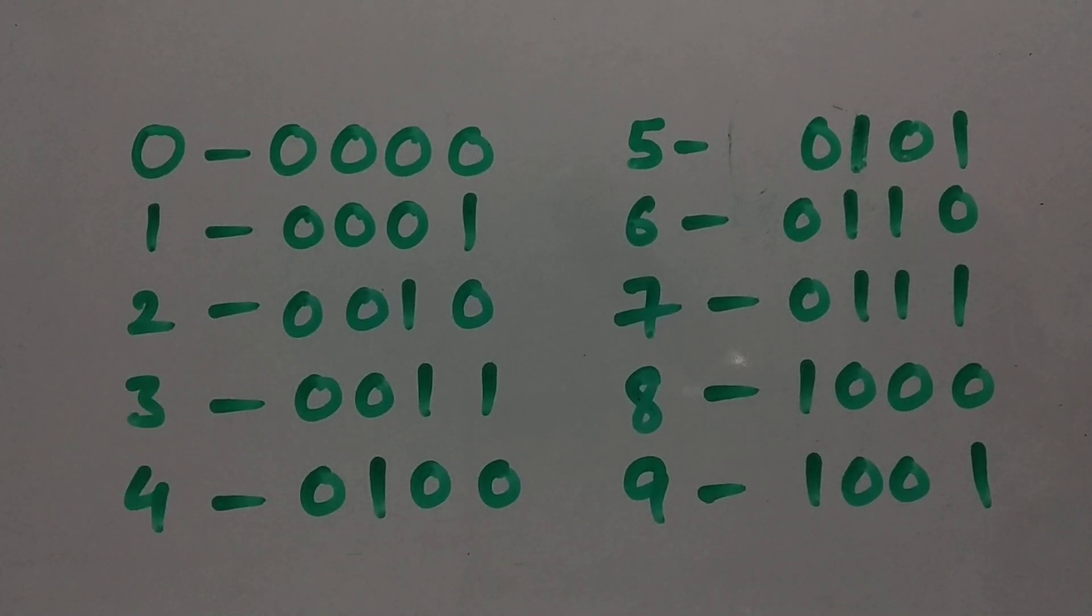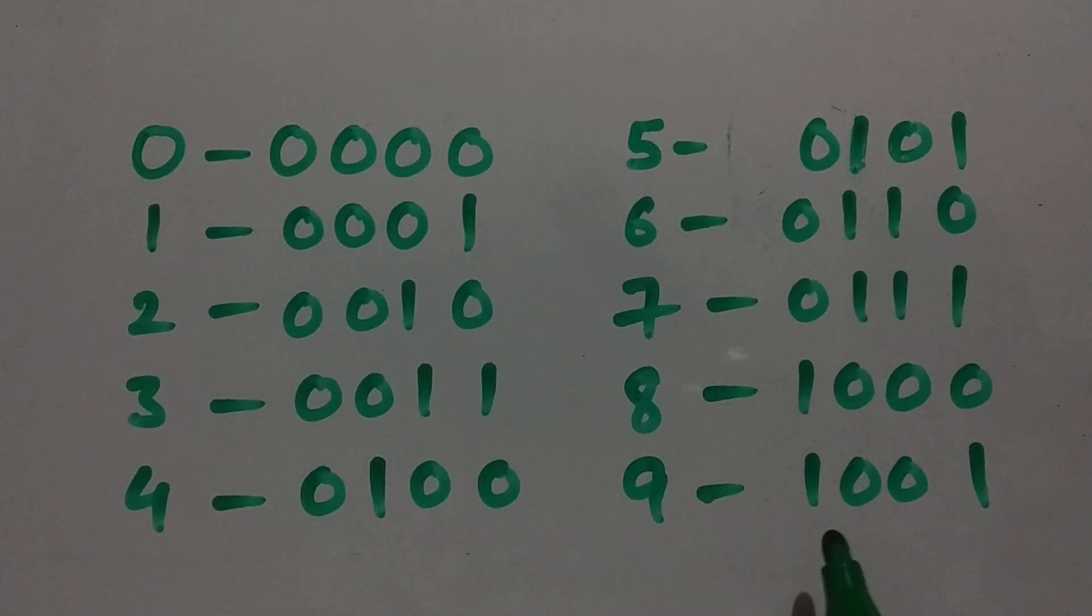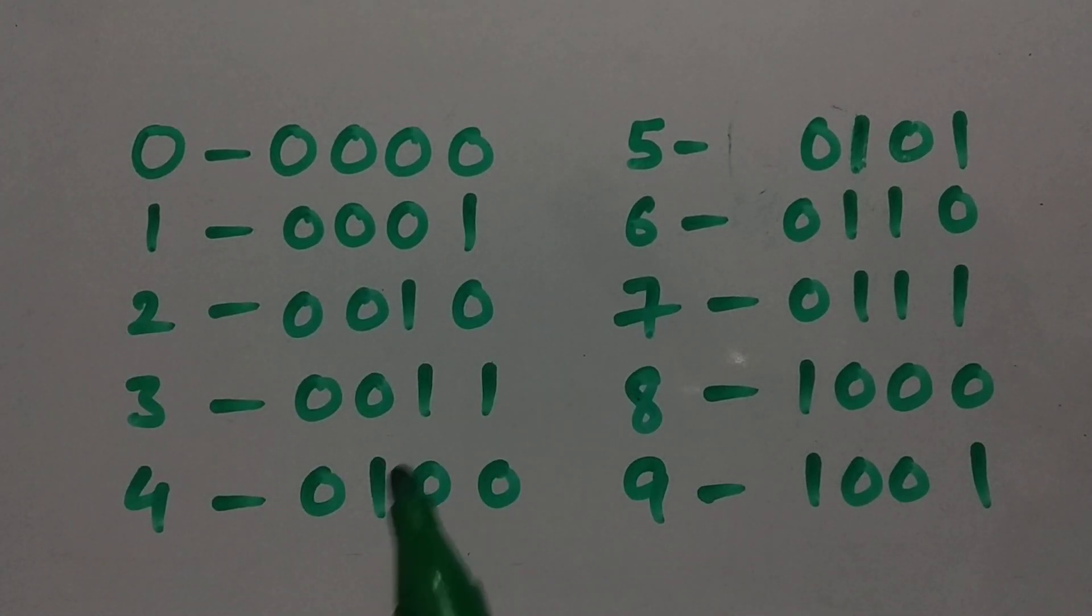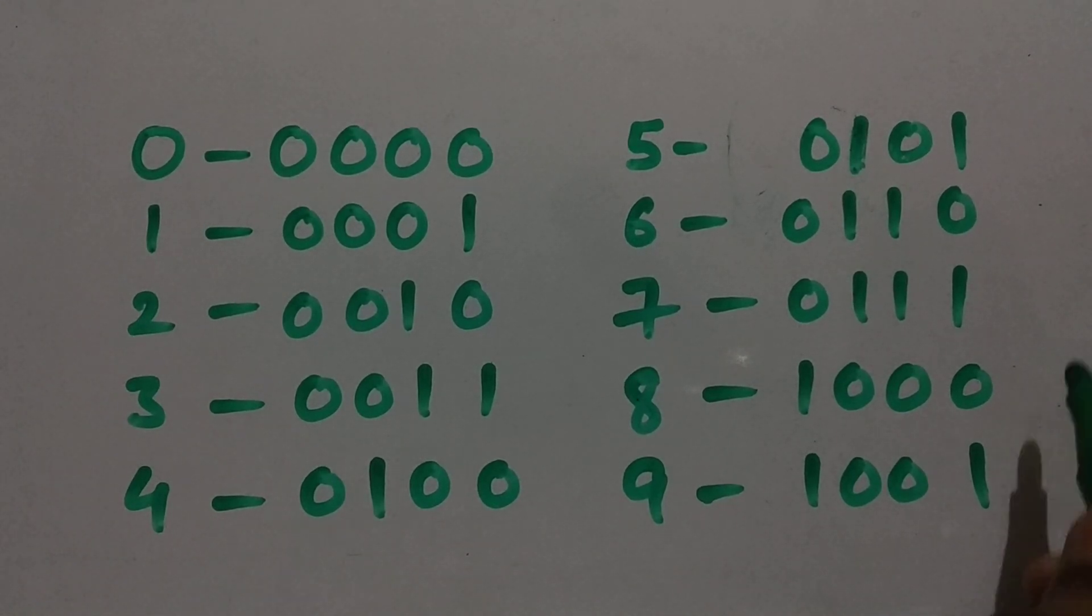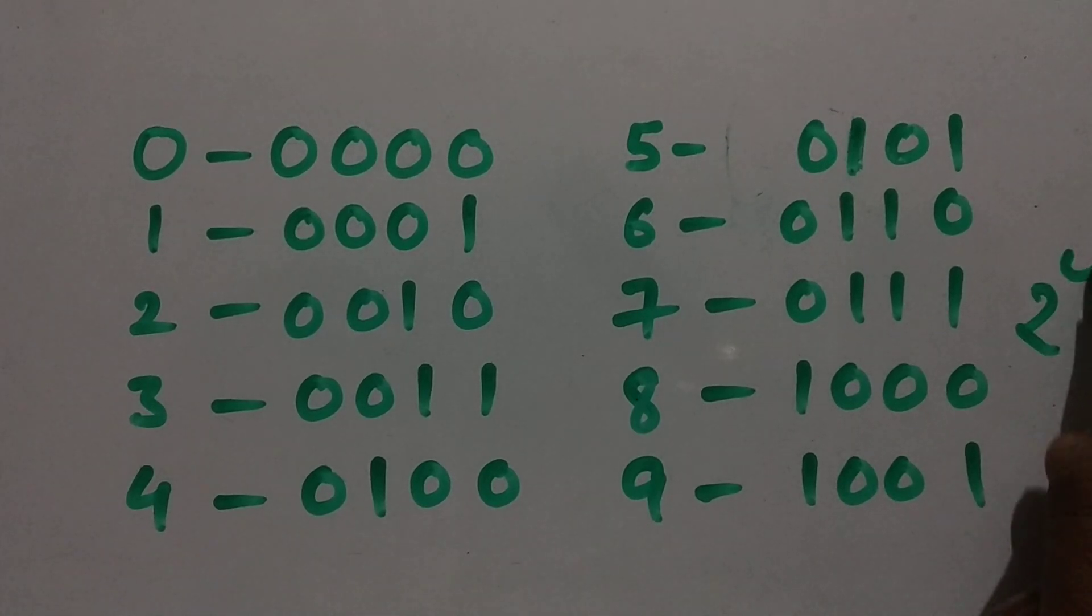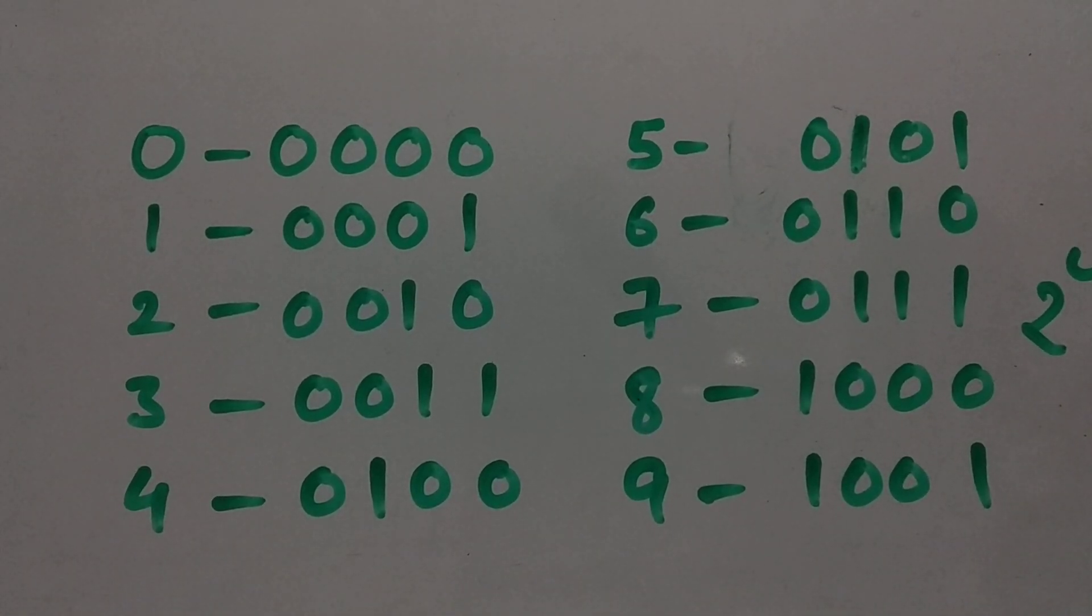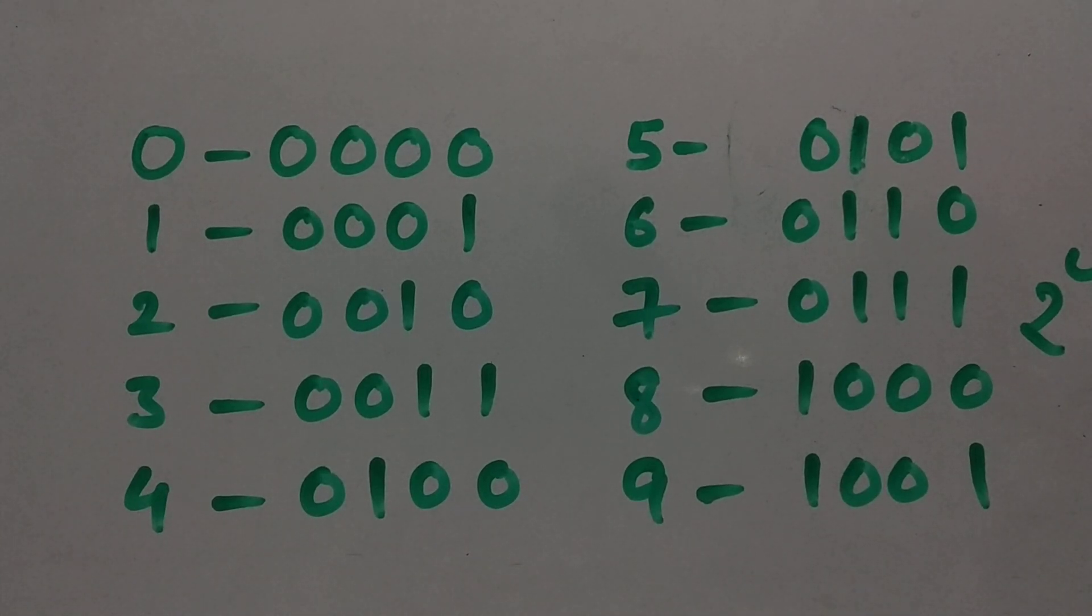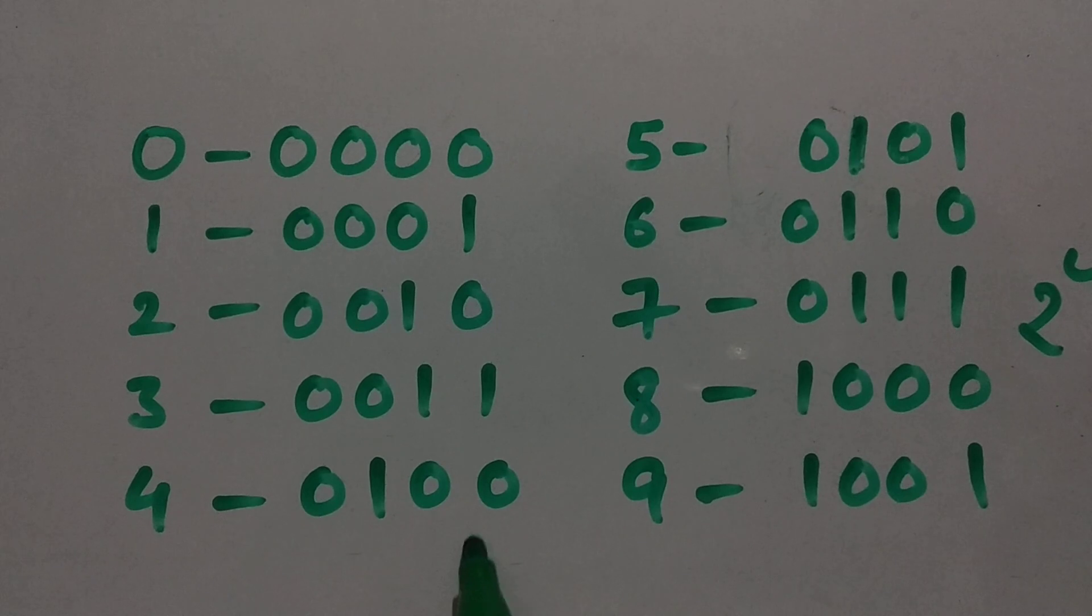As you can see, from 0 to 9 are represented in 4-bit binary numbers: 0000 as 0, 0001 as 1, and so on. But here, with 4 bits we can get up to 16 combinations, that is 2 to the power 4. But we are using only 10 combinations, so what about the remaining six combinations? They are unused.